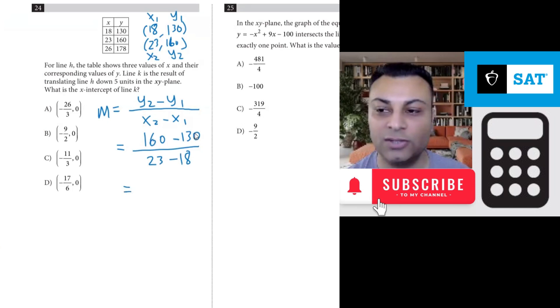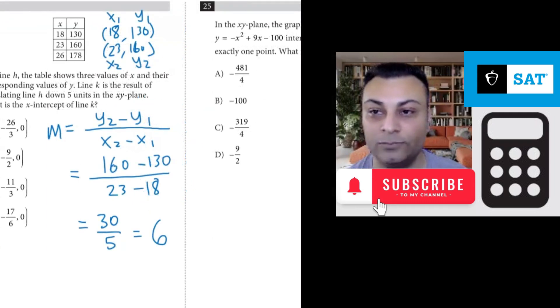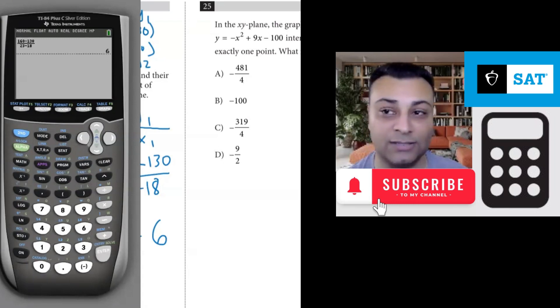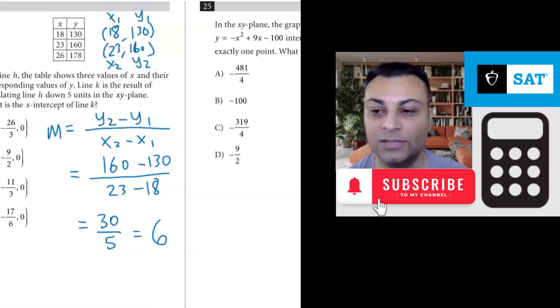Now we can see this is 30 and this is 5, so you get 30 over 5, which is 6. But I want to use the calculator because always use the calculator when you get a chance. So 160 minus 130 over 23 minus 18 and you get the answer of 6. So the slope is 6.